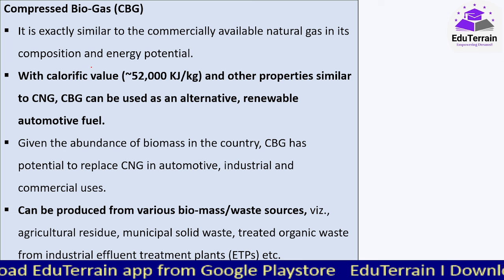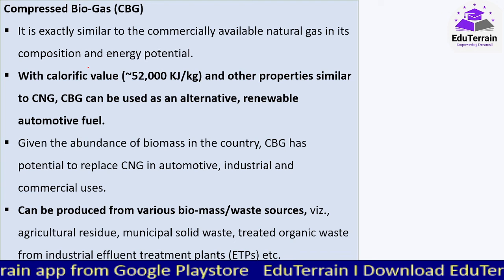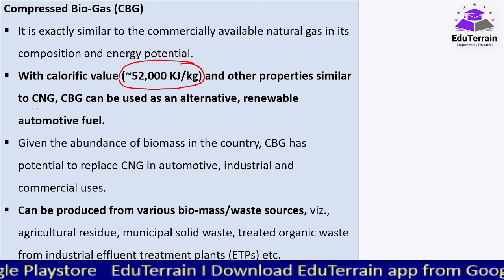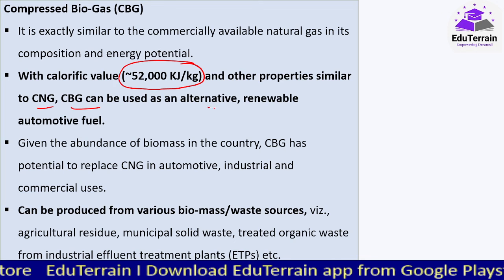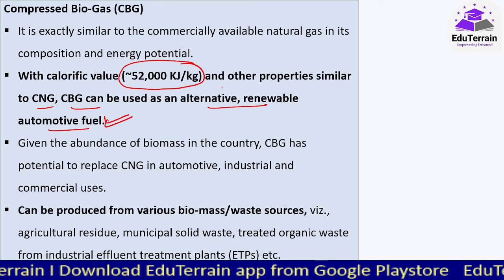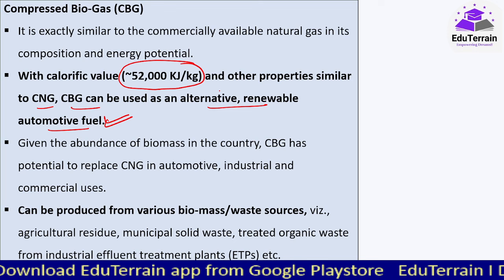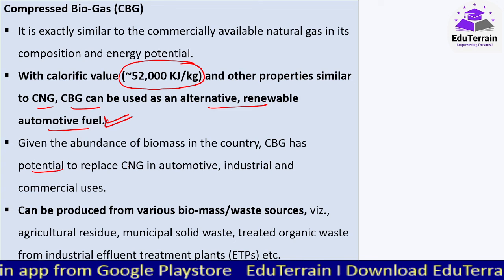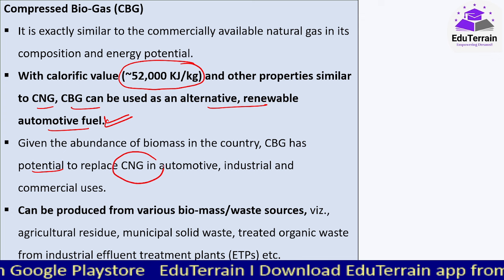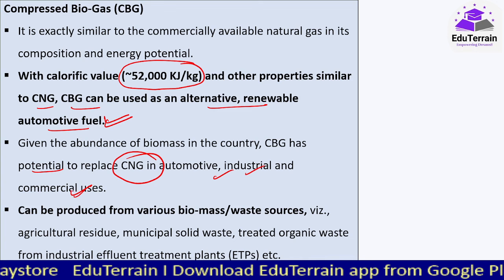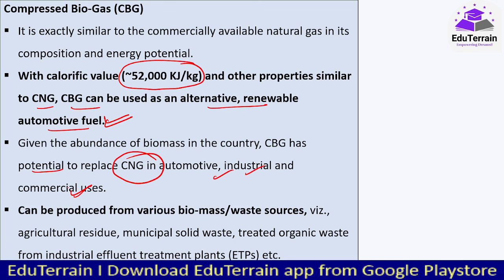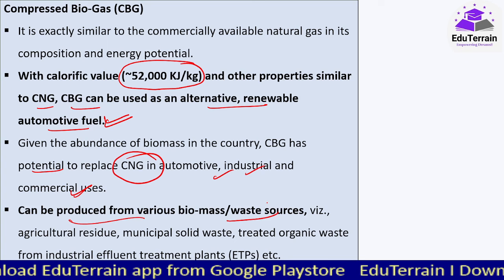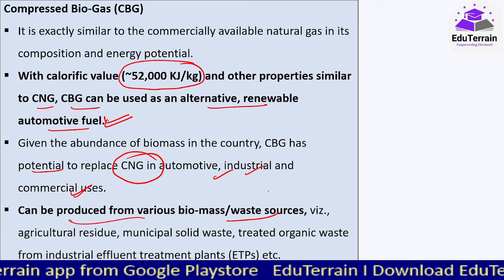Compressed biogas is very similar to the available natural gas in terms of composition and energy potential. It has a calorific value of 52,000 kilojoules per kg and properties similar to CNG. CBG — compressed biogas — has potential to replace compressed natural gas in automotive, industrial, and commercial uses. It can be produced from various biomass or waste sources: organic waste, agriculture waste, and even industrial effluent treatment plants.